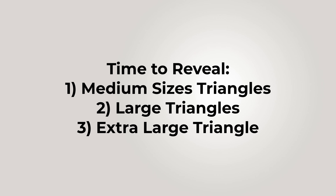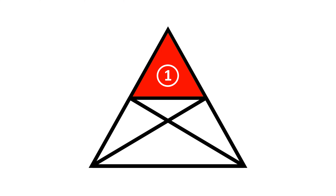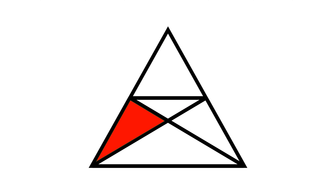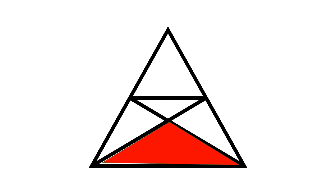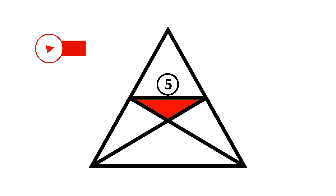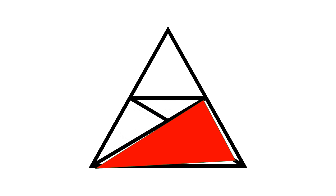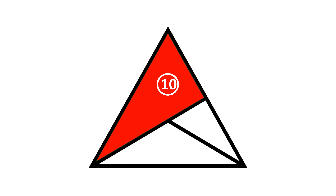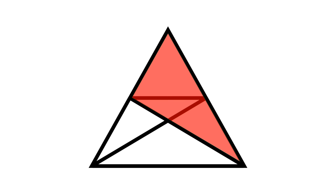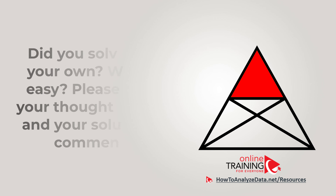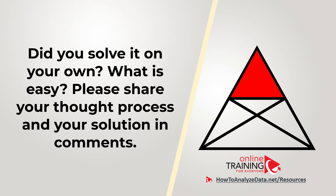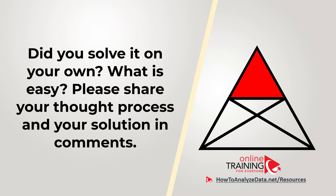I'll show all 12 triangles — starting with smaller ones, then medium-sized, then large — counting from 1 through 12. The correct answer is choice B — 12. Did you come up with a different answer? Please share your thought process in the comment section so we can all learn from your perspective. Hopefully you nailed this question and got to the correct answer on your own.